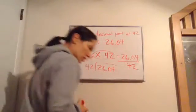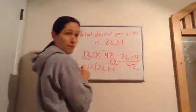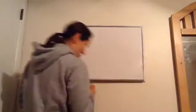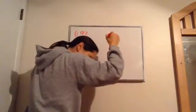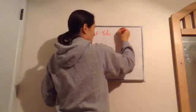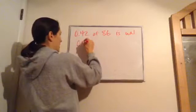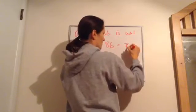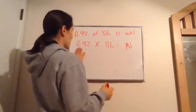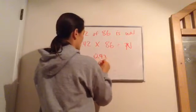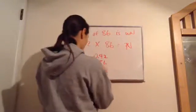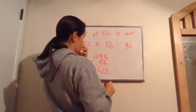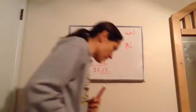Last one: 0.42 of 86 is what number? In mathematical form: 0.42 times 86 = n. Work it normally — 0.42 times 86 gives you 36.12, moving the decimal two places. So 36.12 is our number. That is lesson 30.